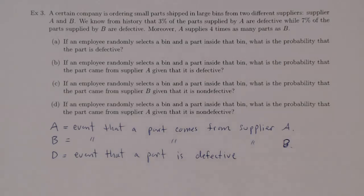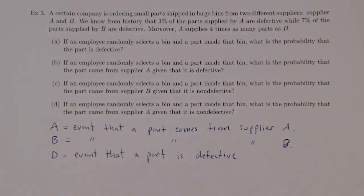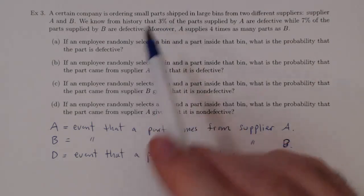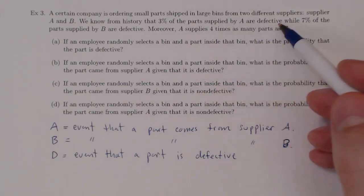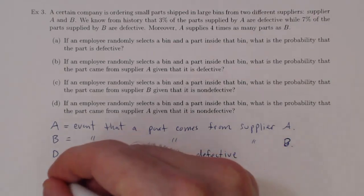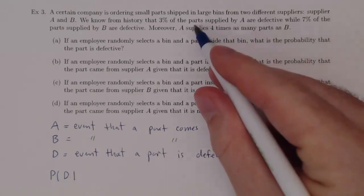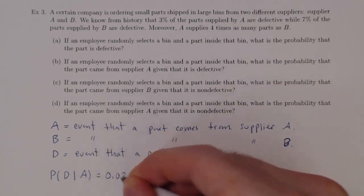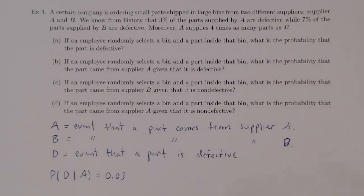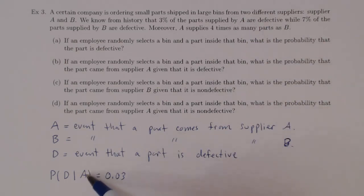We have three events of interest. We know from history that 3% of the parts supplied by A are defective. So the probability that a part is defective given that it was supplied by A is 0.03. That is a conditional probability: given that a part comes from Supplier A, the probability of it being defective is 3%.